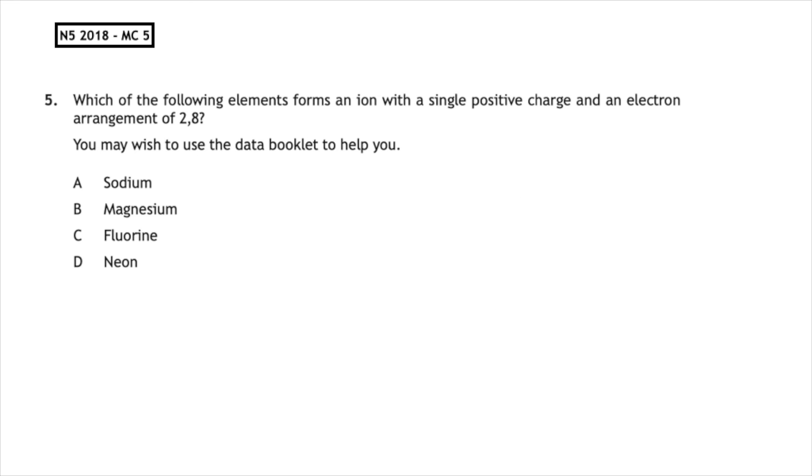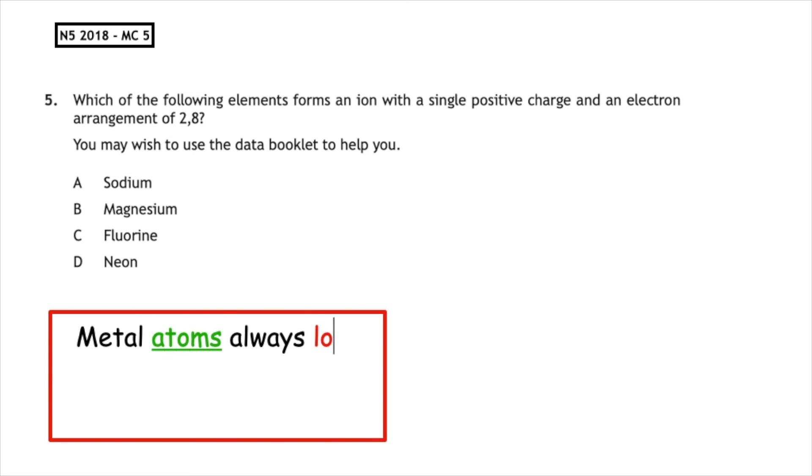This past paper question is from the National 5 2018 multiple choice question 5. Which of the following elements forms an ion with a single positive charge and an electron arrangement of 2,8? You may wish to use the data booklet to help you. So we know that metal atoms always lose electrons to form positive ions. Fluorine and neon are non-metals, so those can't be the correct answer.